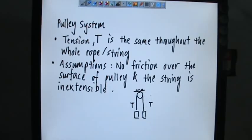So the assumption is there's no friction at this place, no friction over the surface of pulley. And the most important thing is the string is inextensible. It won't be able to stretch by itself.